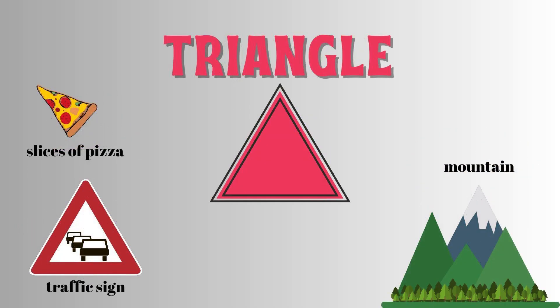Now, let's talk about the triangle. A triangle is a shape with three sides and three corners. The sum of its angles is always the same. Examples of triangle shapes can be a traffic sign, a mountain, or a slice of pizza.